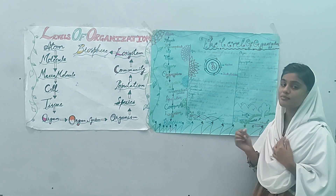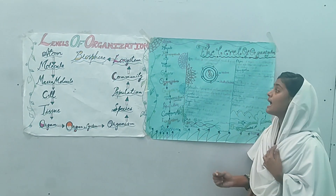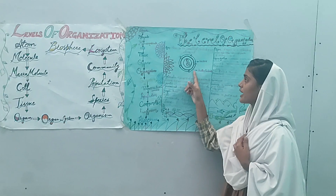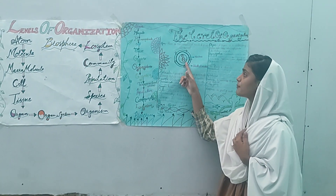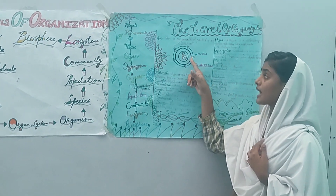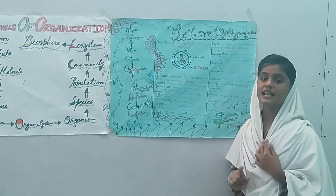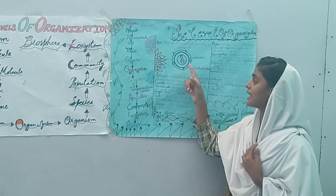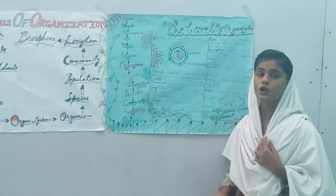What is an atom? An atom is the smallest particle of an element. In an atom, electrons orbit around the nucleus. Protons and neutrons are present in the nucleus. Protons carry a positive charge. Neutrons have no charge. Electrons carry a negative charge.